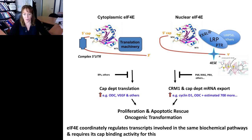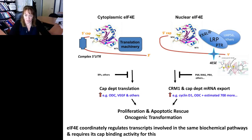Importantly, there is also a nuclear arm to 4E, and as I'll discuss today, this nuclear arm is also relevant to 4E's ability to oncogenically transform cells. The same structure applies, and the same requirement for the M7G cap for RNAs to bind 4E is true in the nucleus as well as the cytoplasm. A specific subset of factors distinct from the translation machinery associate with 4E and are important for its ability to export a specific subset of RNAs. These specific RNAs contain what we refer to as a 4E sensitivity element, a transferable secondary structure element.